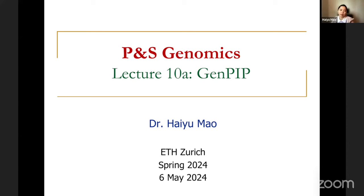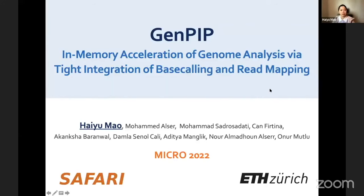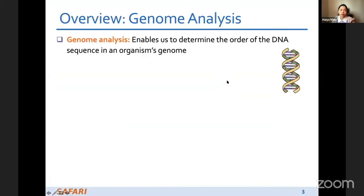Today I'm going to introduce our project called GenePIP. GenePIP is an in-memory acceleration system for genome analysis, featuring tight integration of the nanopore genome analysis steps. First I will give an overview of the whole project, then I will go into the details.